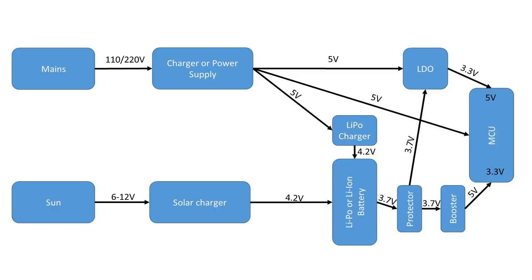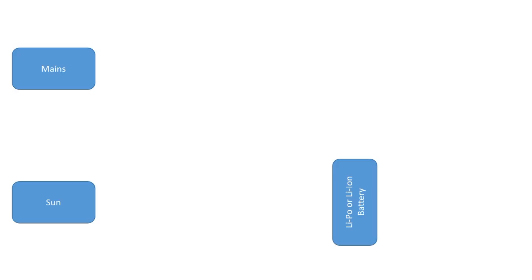How do we power our projects? Generally, we either use mains or sun as a principal power. And sometimes, we use a battery. Most of our MCUs and sensors either run on 3.3 or 5V or sometimes both. What are the choices in between?